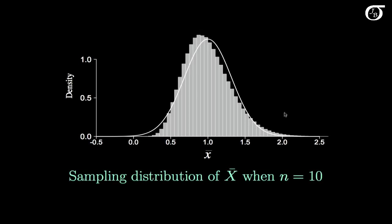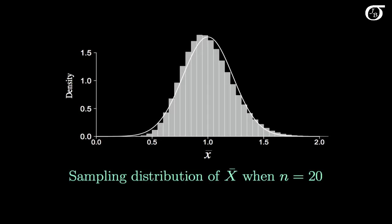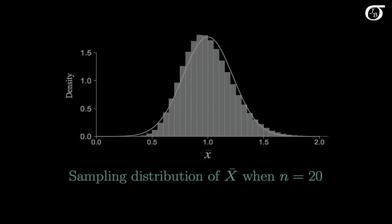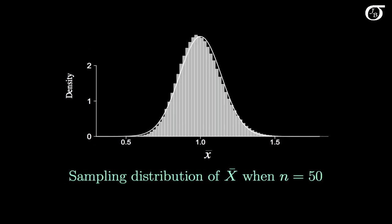When n is 10 we're getting a little bit closer, but we can still see some skewness. When n is 20 we're getting closer still. And when n is 50, this histogram of sample means, which is approximately the sampling distribution of X bar, is pretty close to that superimposed normal curve. For a sample size of 50, the sampling distribution of X bar is pretty close to normal, and for larger and larger sample sizes it would get closer and closer.